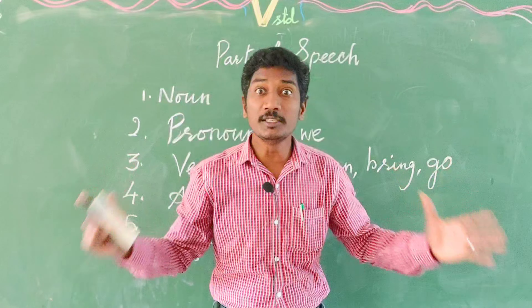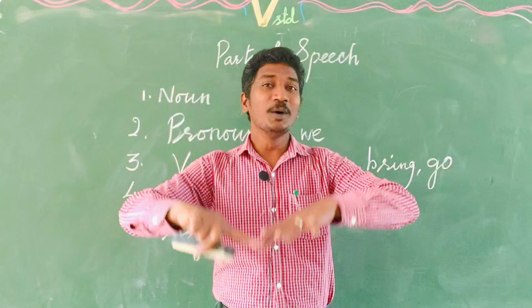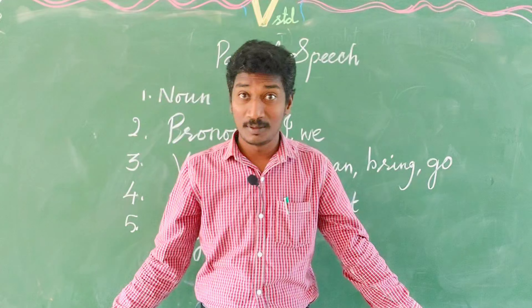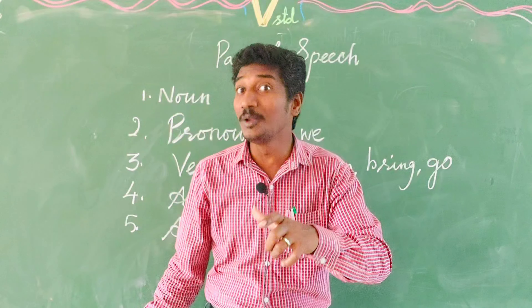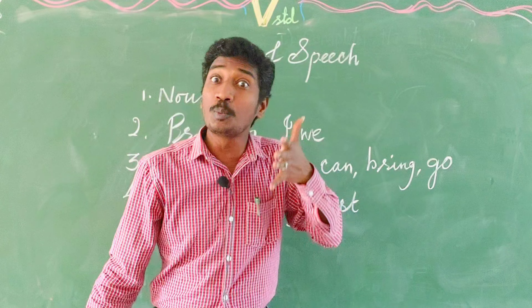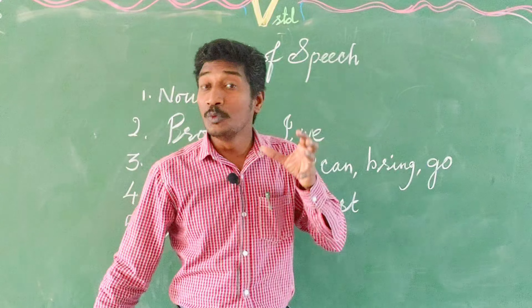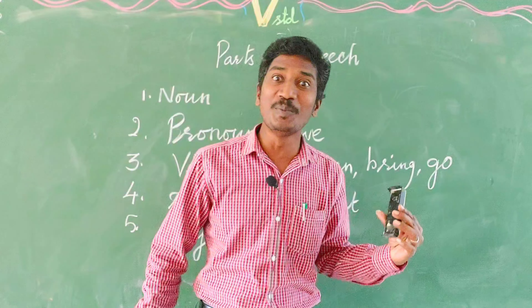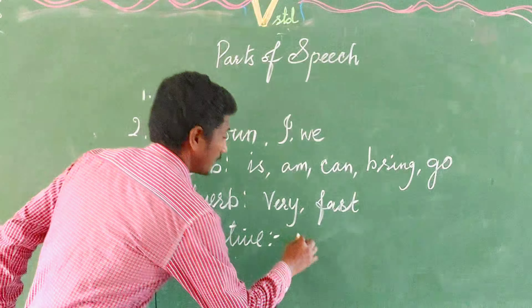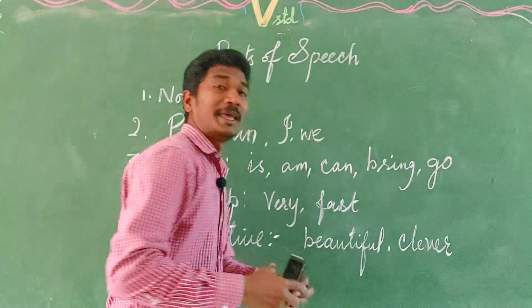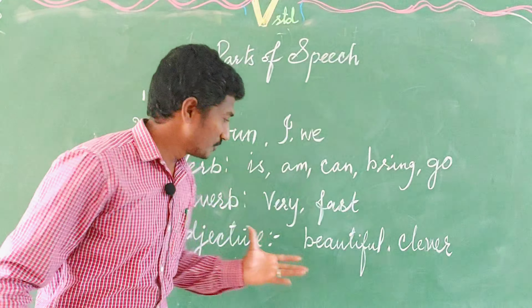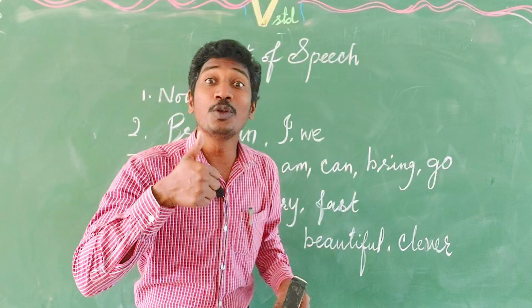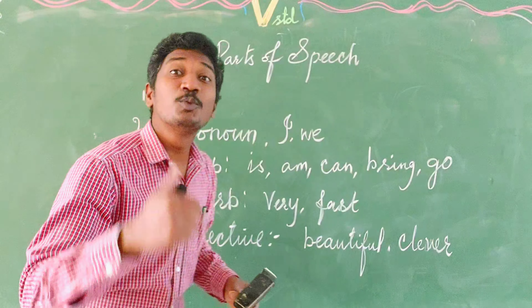Adjective — without this, the world cannot be beautiful! Adjective describes a noun or a pronoun. For example: 'She is a beautiful girl' — what kind of girl? Beautiful. 'He is the clever boy in the classroom' — clever is the adjective. 'A tall building,' 'a tall tree' — without adjectives, English cannot be beautiful. Words like beautiful, extra, tall, smart are all called adjectives. Adjective is a word which describes a noun or pronoun.